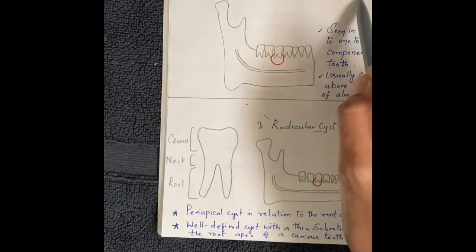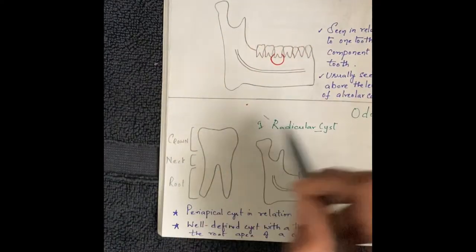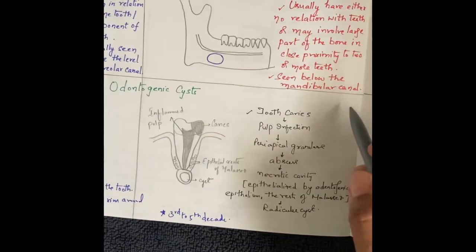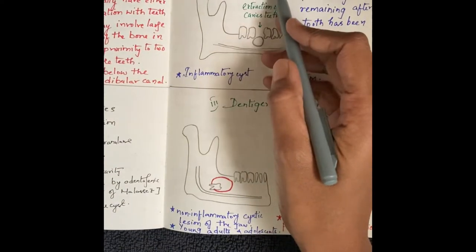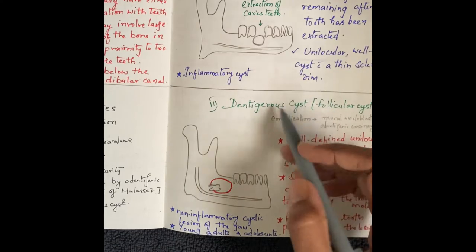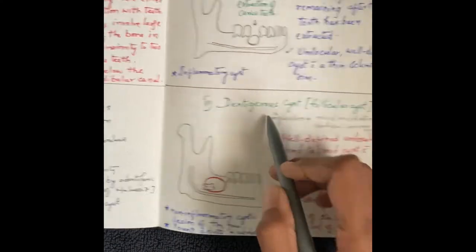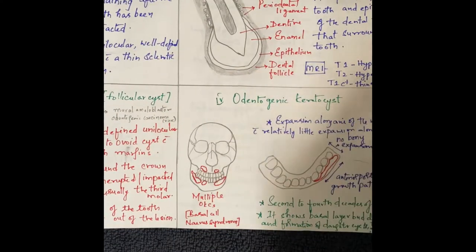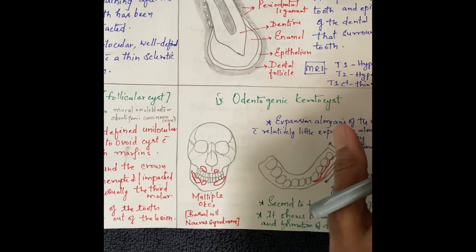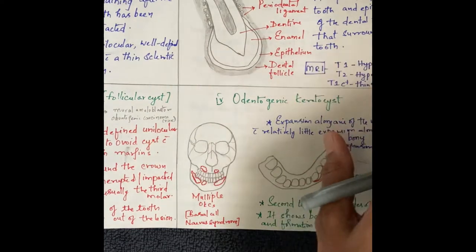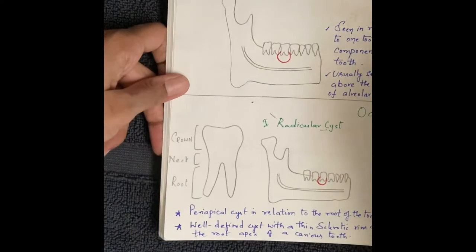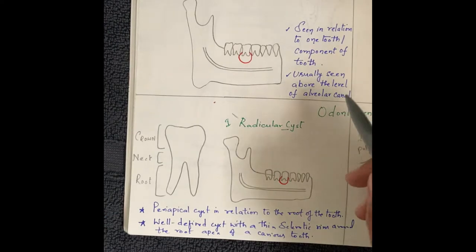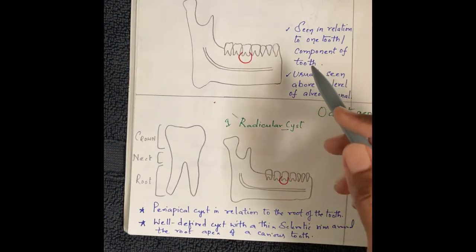In odontogenic lesions we have the radicular cyst, residual cyst, dentigerous cyst, and odontogenic keratocyst. In this video we will be discussing these four cysts.